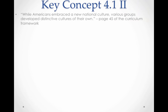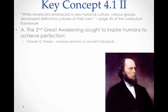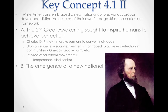Key Concept 4.1, Roman Numeral II: while Americans embraced a new national culture, various groups developed distinctive cultures of their own. We focus on the Second Great Awakening, which inspired humans to achieve perfection. Charles G. Finney gave massive sermons to convert individuals, bringing people back to religion — very influential especially in towns along the Erie Canal. Utopian societies began to develop as social experiments hoping to achieve perfection in communities, such as Oneida and Brook Farm. The Second Great Awakening also inspired reform movements like temperance, abolition, and education.